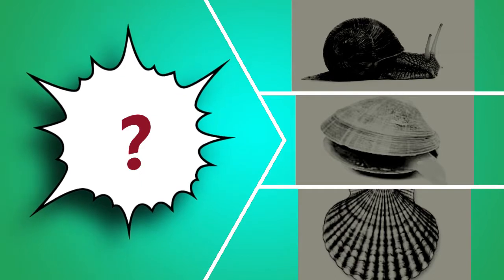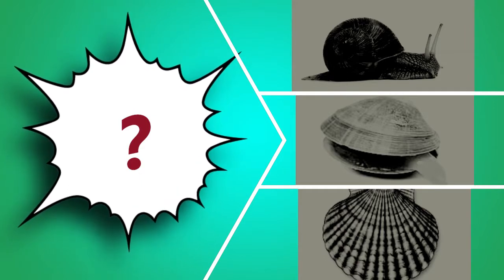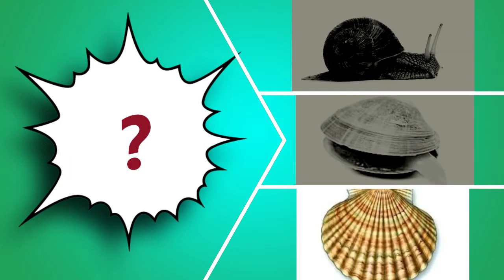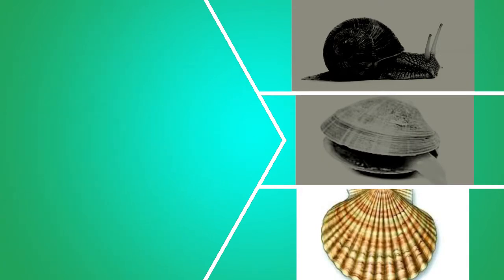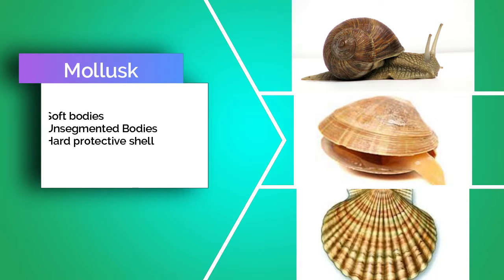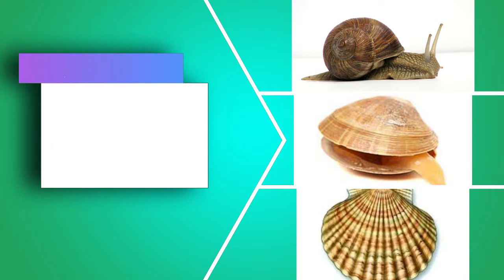Here are some examples of classification. We have a snail, a clam, and a scallop. But what do all these things have in common? Each of these creatures have soft bodies — there are no segments, it's just one big body, just one part. And there's something covering that body, like a shell: the snail shell, the clam shell. We call these mollusks, and that's how we classify them.